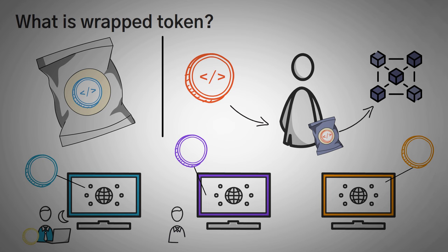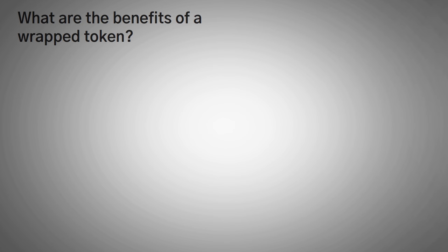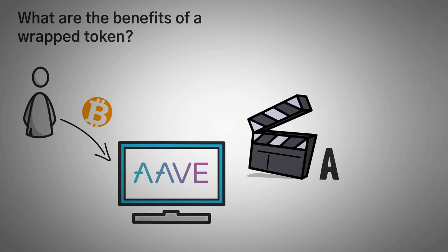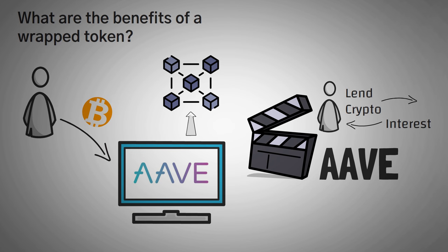So what are the benefits of a wrapped token? Well, the problem is that tokens are tough to use on different blockchains. For example, say you want to deposit some bitcoin on a popular blockchain application called Aave. We have an entire video about Aave, but it is basically an application that allows you to earn an interest rate by lending out your crypto. However, Aave is only available on the Ethereum network. You can't use your bitcoins on it.